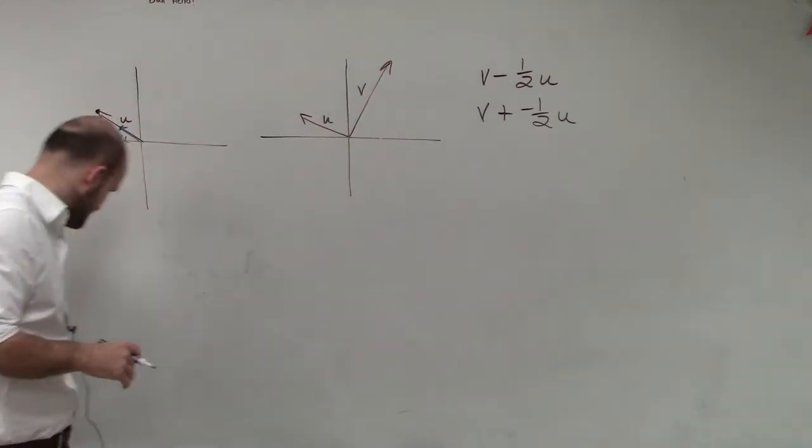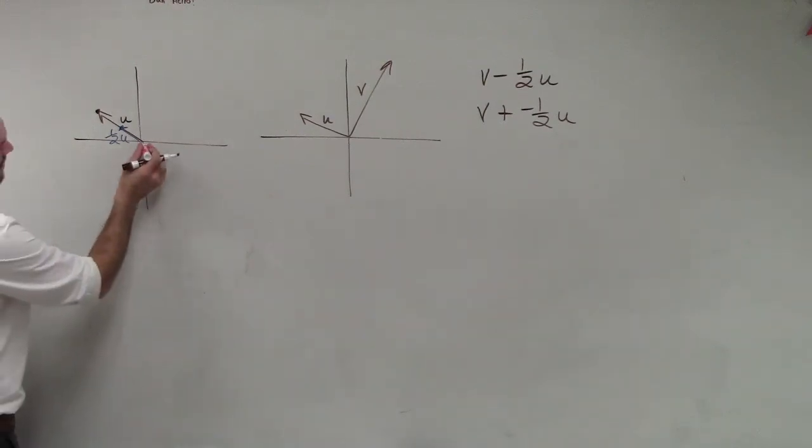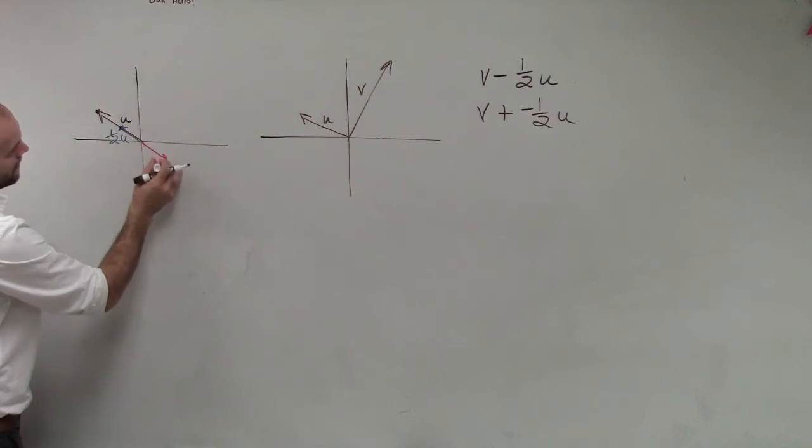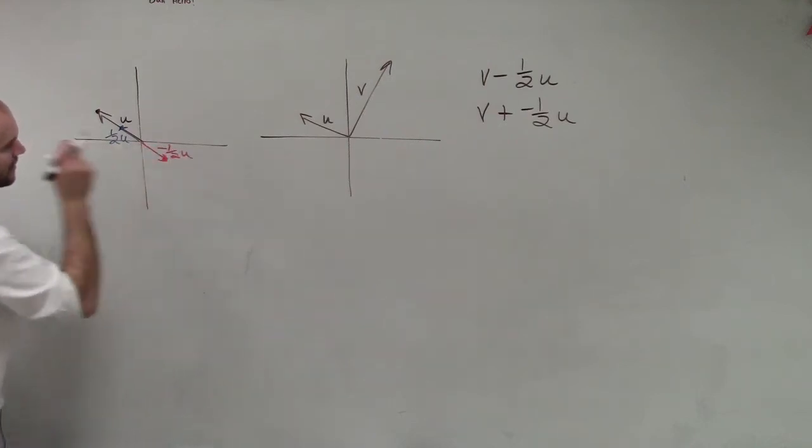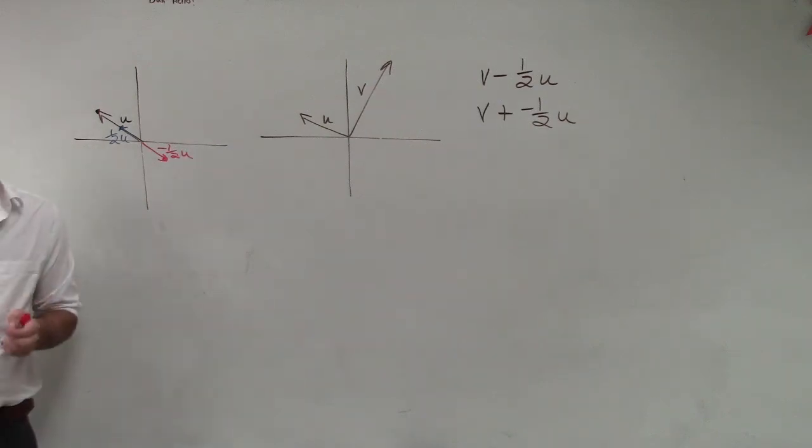Then if I say, what's negative u? Well, negative one-half u is just going to be the exact opposite of it reflected. So if this is u, then here's one-half u. Then negative one-half u is just in the opposite direction.